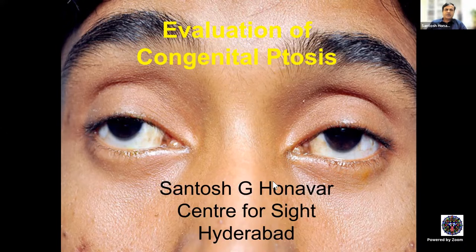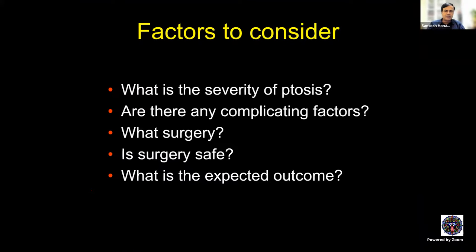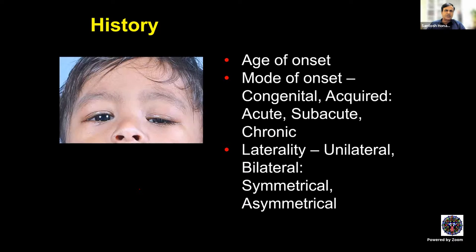This part will cover evaluation of congenital ptosis. Whenever we have a patient with ptosis, we must answer these questions before proceeding with decision making: What is the severity of ptosis? Are there any complicating factors such as monocular elevation deficit, dry eye, or poor corneal sensation, which would have implications on surgical outcome and complications? What surgery would I do, is it safe, and what is the expected outcome?